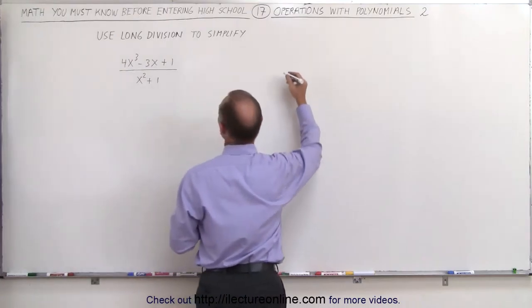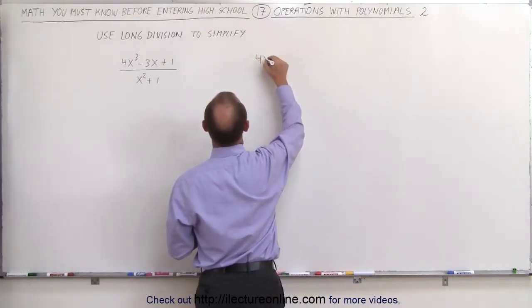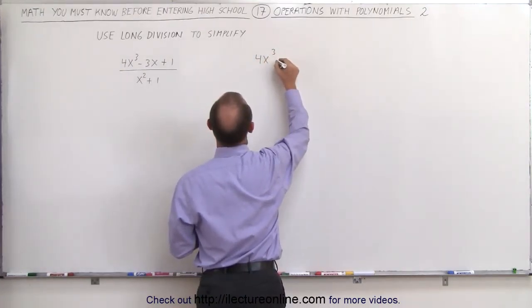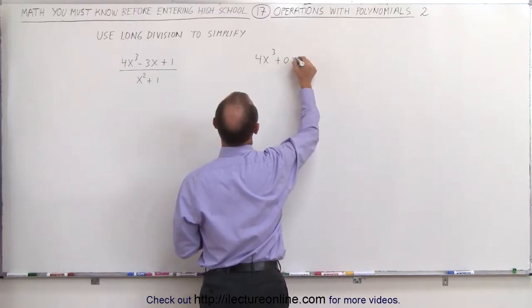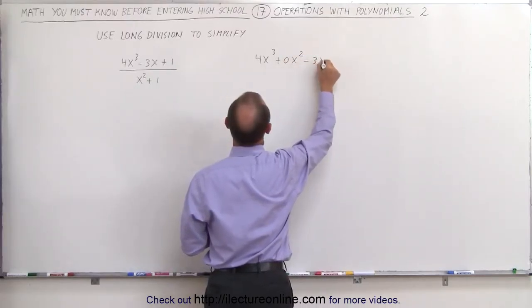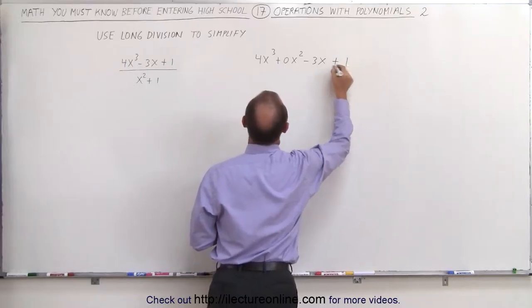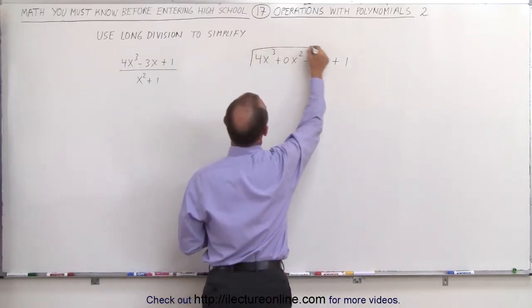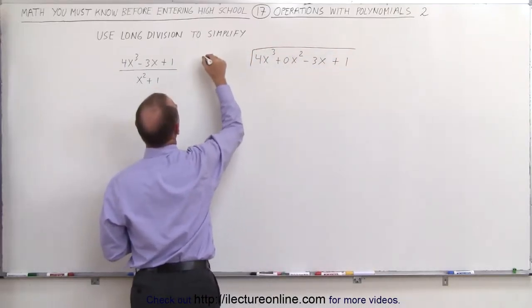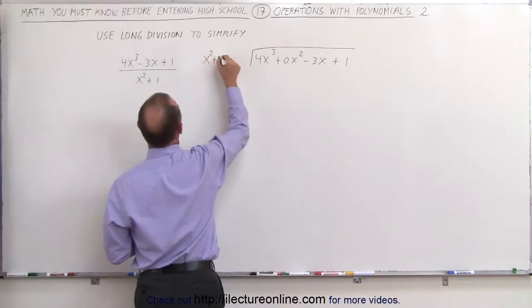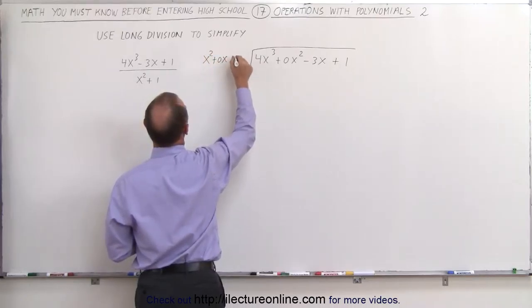This is what we're going to do then. We're going to take 4x³ plus 0x², that's the missing term, minus 3x plus 1, and we're going to divide it by the quantity x² plus 0x, again that's the missing term, plus 1.